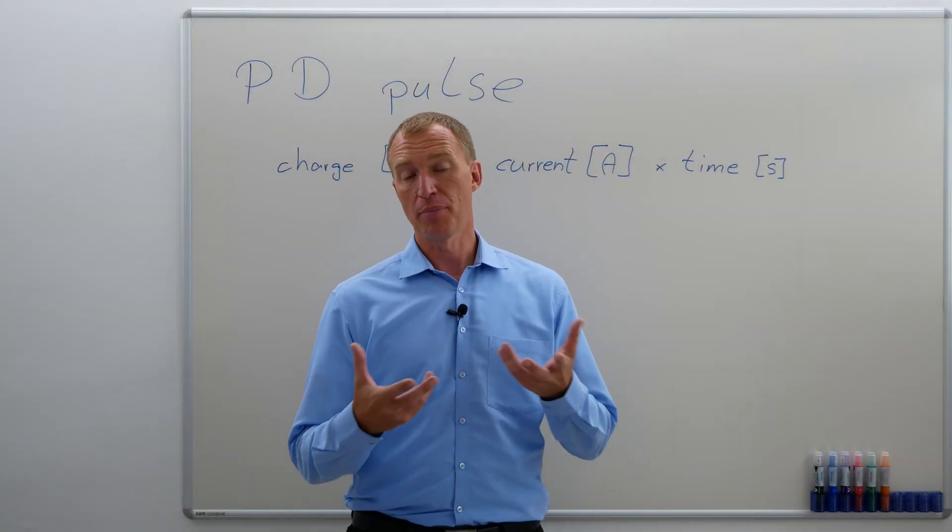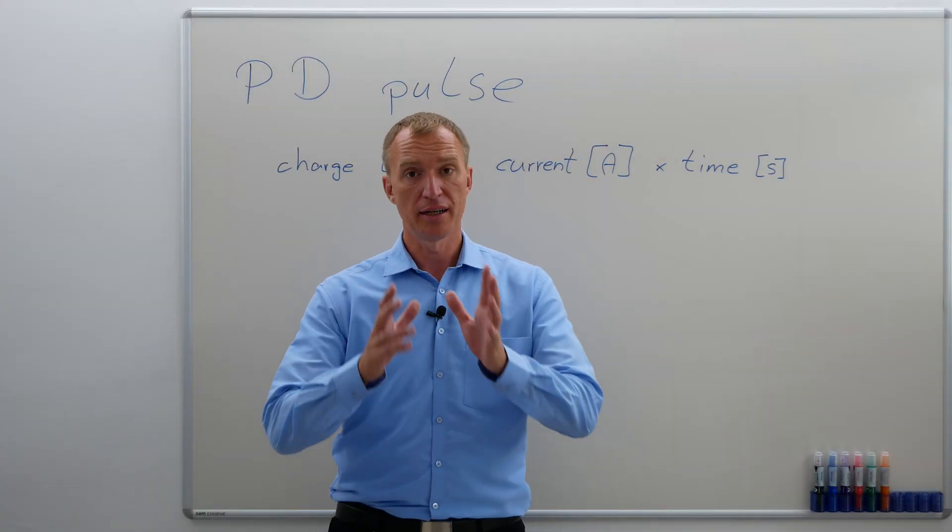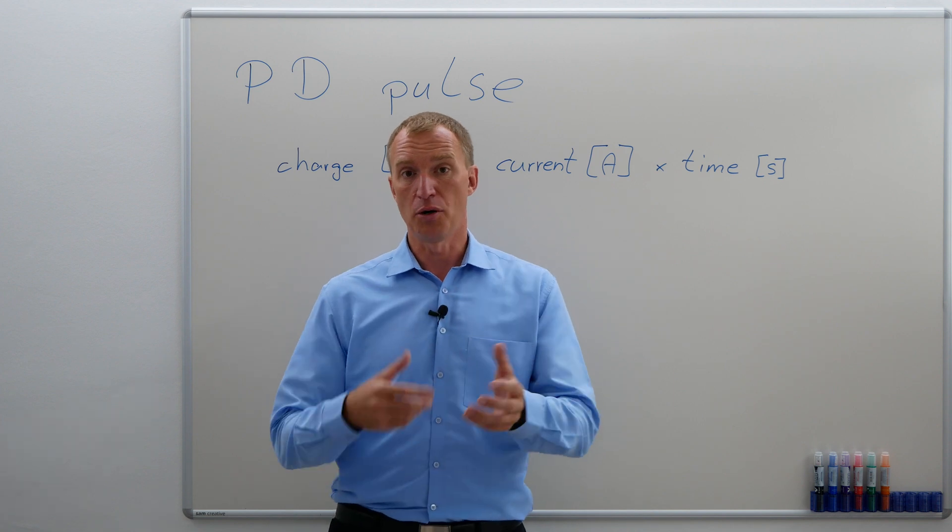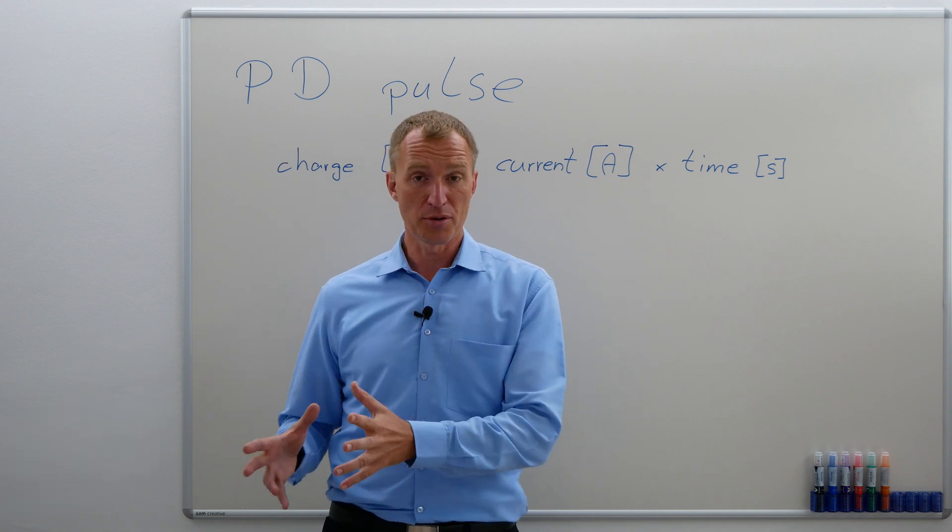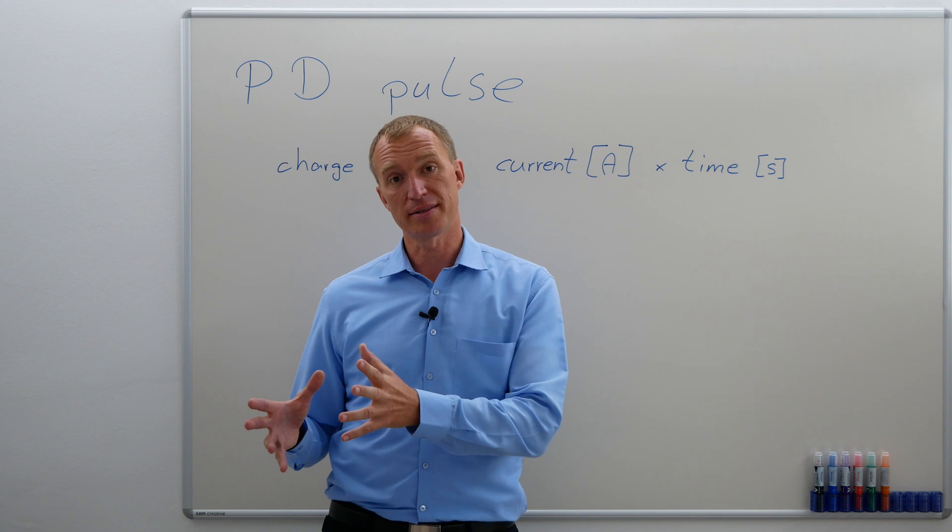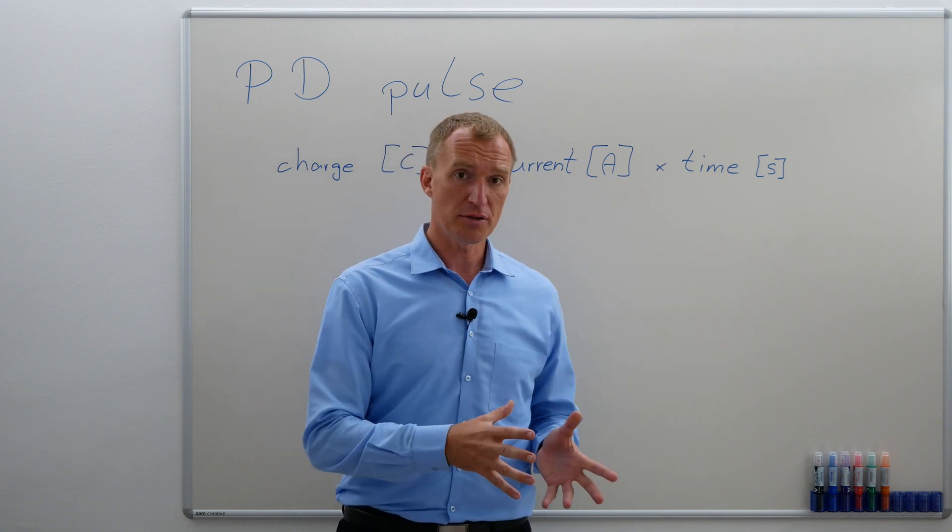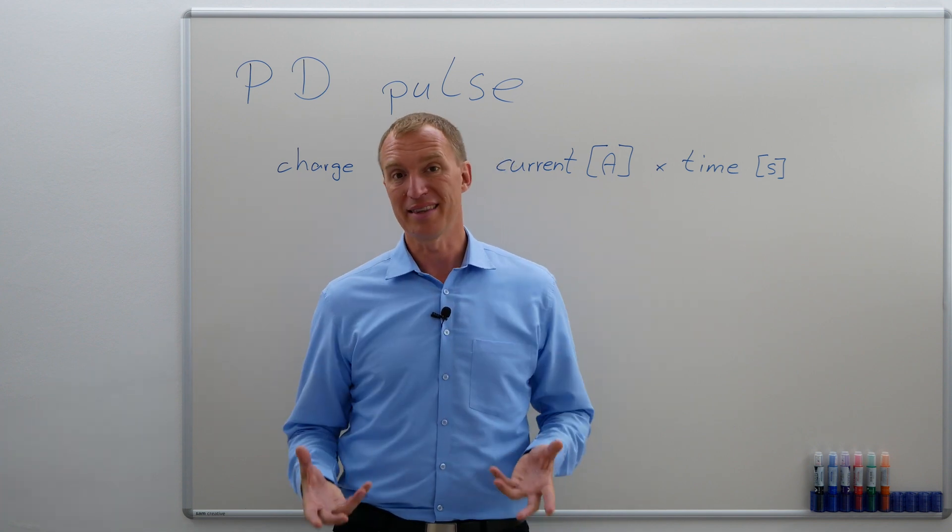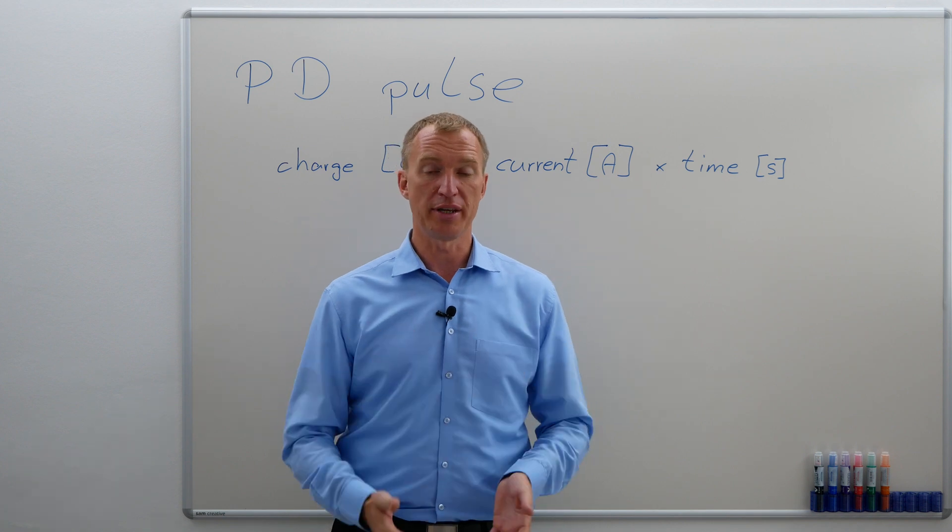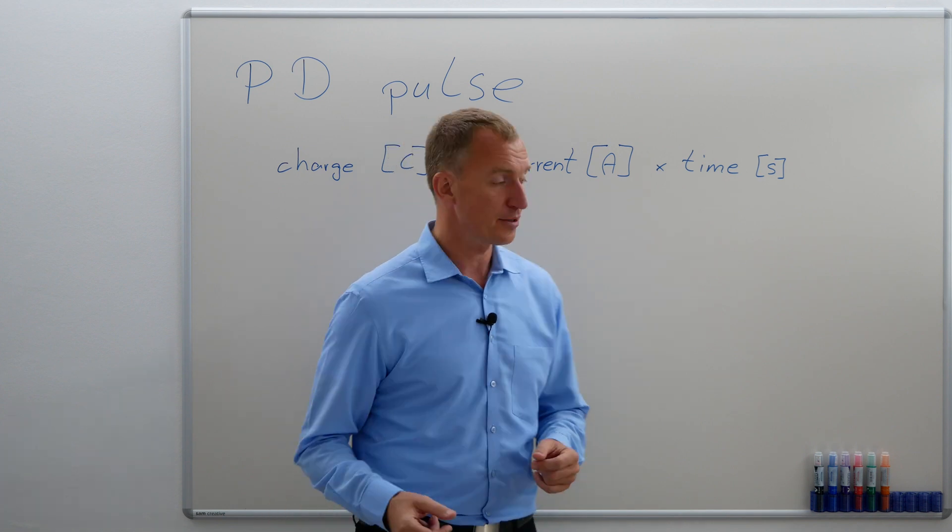What is a PD pulse? Well, partial discharges create heat, we know that, sound, light, and all of these are pulses. But most importantly, they create an electromagnetic pulse. And when we measure partial discharges, we're usually using the electrical pulse. So let's talk about the electrical partial discharge pulse.